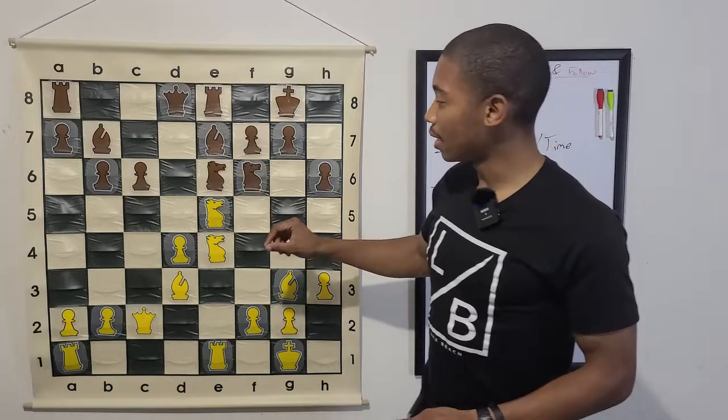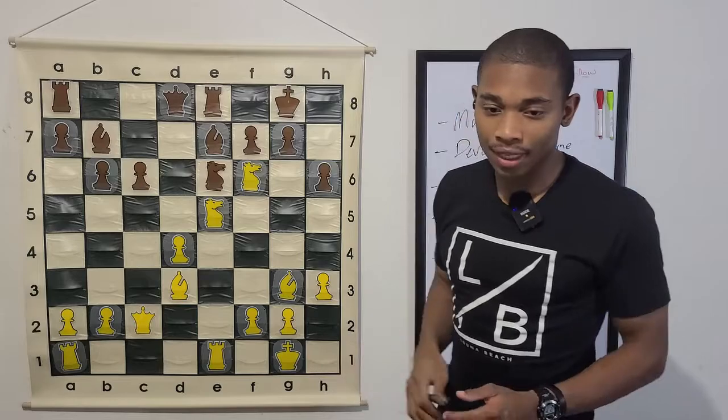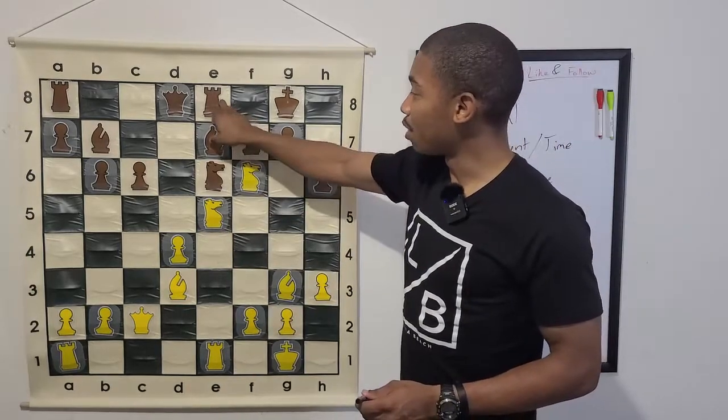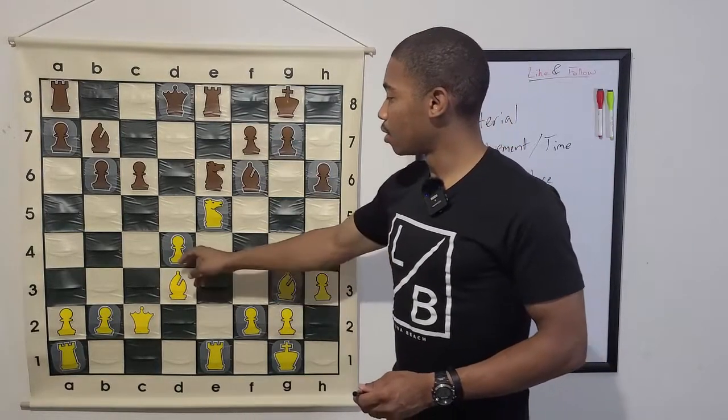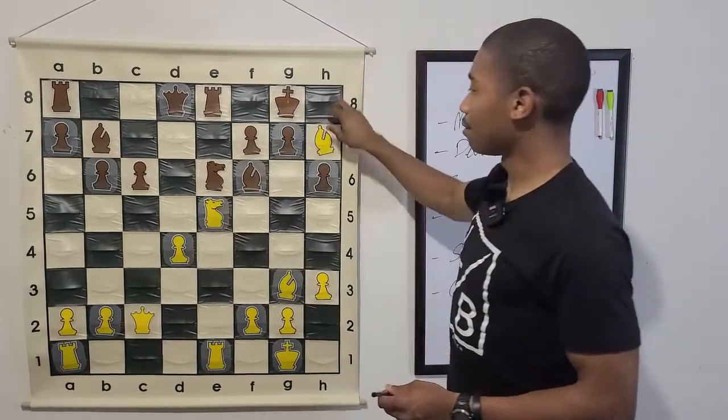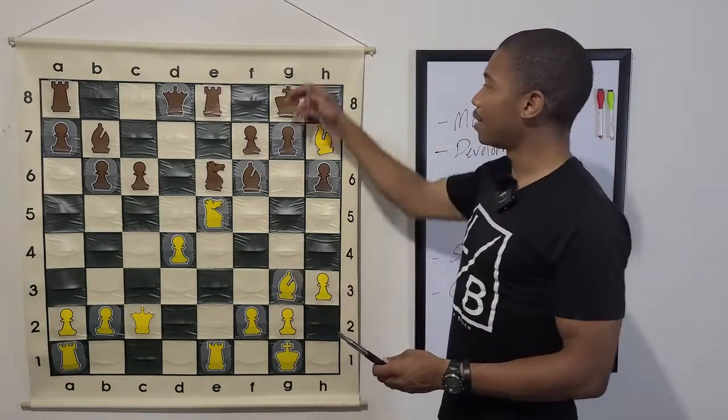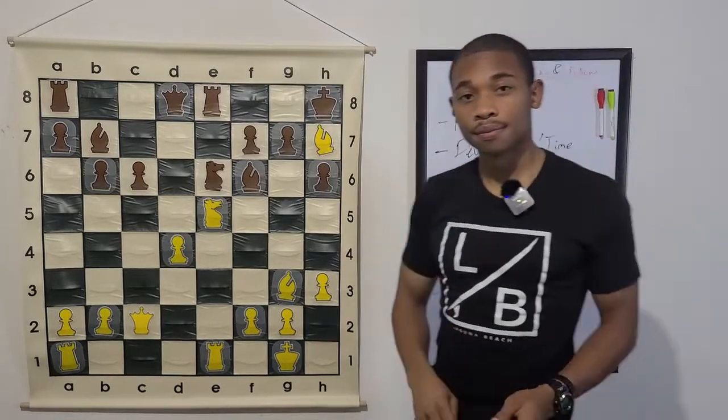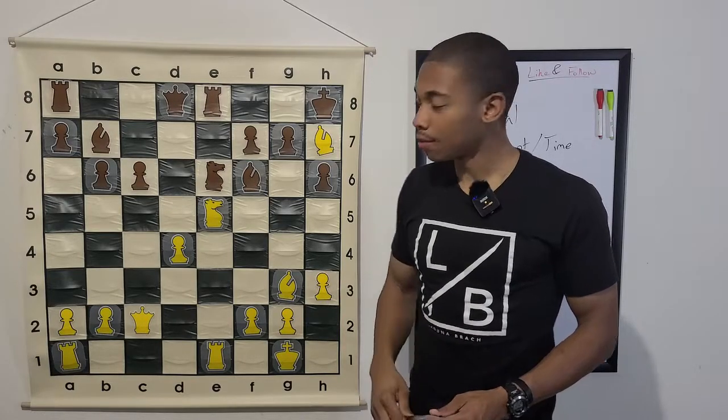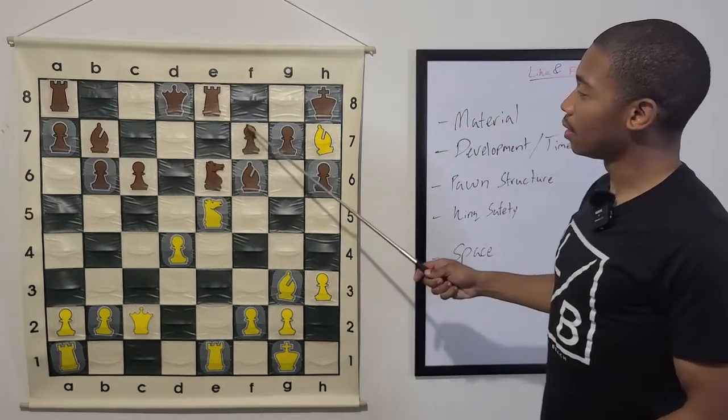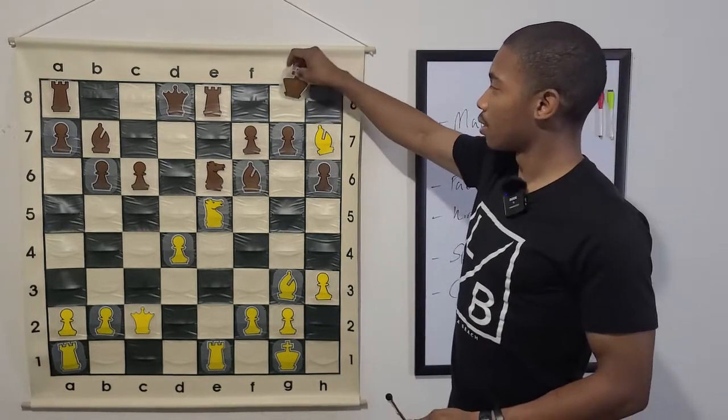And then we got knight takes f6. And then after knight takes f6, we have bishop takes f6. Bishop h7 check. Now, let me just put this out there. What happens if the king goes to h8? What happens? What would white's best move be? It's very simple, actually. Knight takes f7. Checkmate. So, the king has to go to f8.